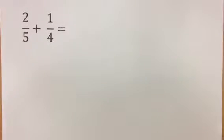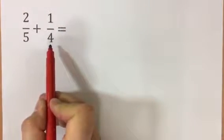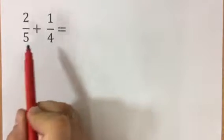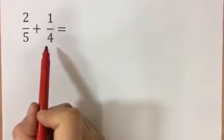Okay, let's look at how we're going to add these two fractions. Now the first thing you'll notice is the denominators are different. So the first objective here is going to be to find the lowest common multiple between 5 and 4 so we can have a common denominator.